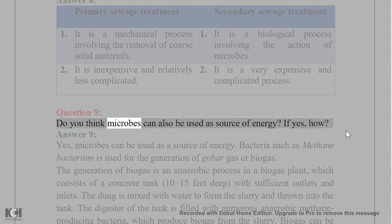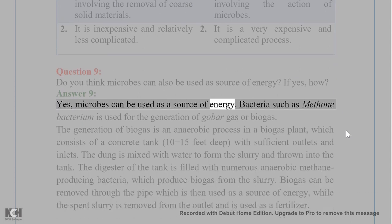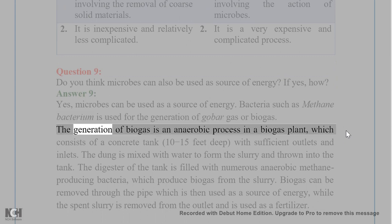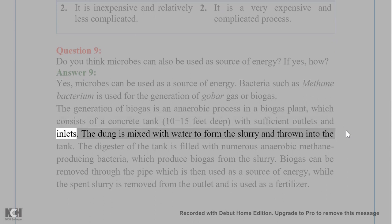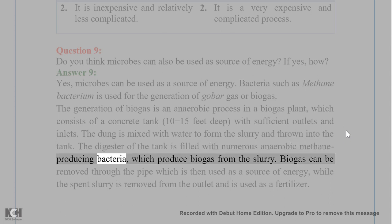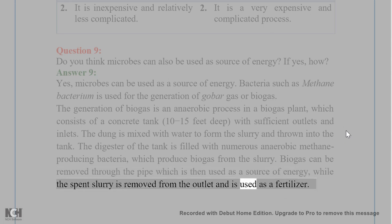Question 9. Do you think microbes can also be used as a source of energy? Answer 9. Yes, microbes can be used as a source of energy. Bacteria such as methane bacterium are used for the generation of gobar gas or biogas. The generation of biogas is an anaerobic process in a biogas plant, which consists of a concrete tank 10–15 feet deep with sufficient outlets and inlets. The dung is mixed with water to form slurry and thrown into the tank. The digester is filled with anaerobic methane-producing bacteria, which produce biogas from the slurry. Biogas is removed through a pipe and used as a source of energy, while the spent slurry is removed from the outlet and used as fertilizer.